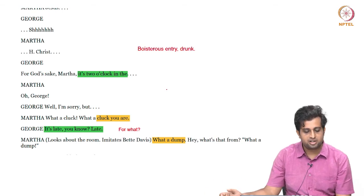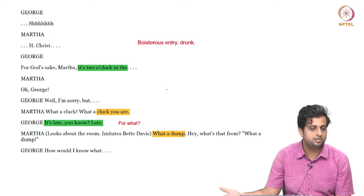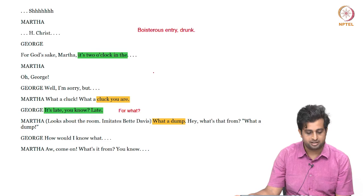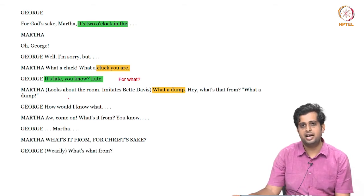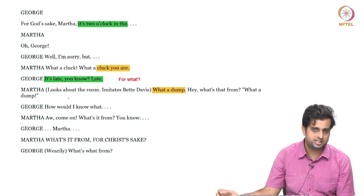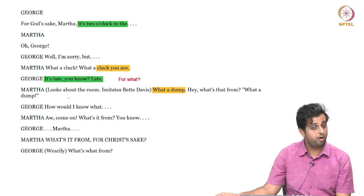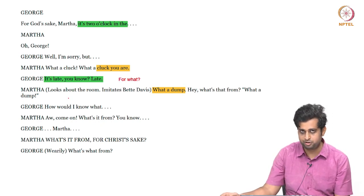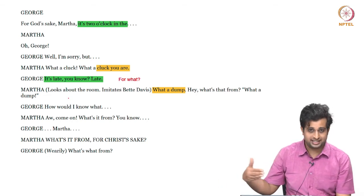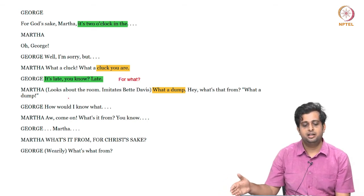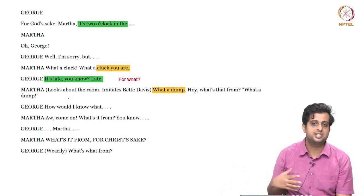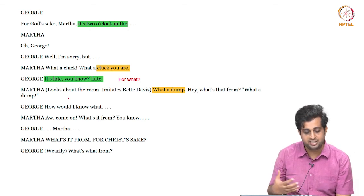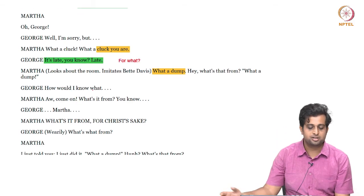The play starts with George saying 'for God's sake Martha, it's two o'clock.' We don't know if it's two in the afternoon or at midnight, but there are continuous references to something being late. This idea of lateness is very important — George and Martha are a couple who probably wanted children, but at this age it's probably too late. The big bad wolf carries a sense of death, that time is running out, and the play starts with that sense of something vanishing, a need to hold on to something.